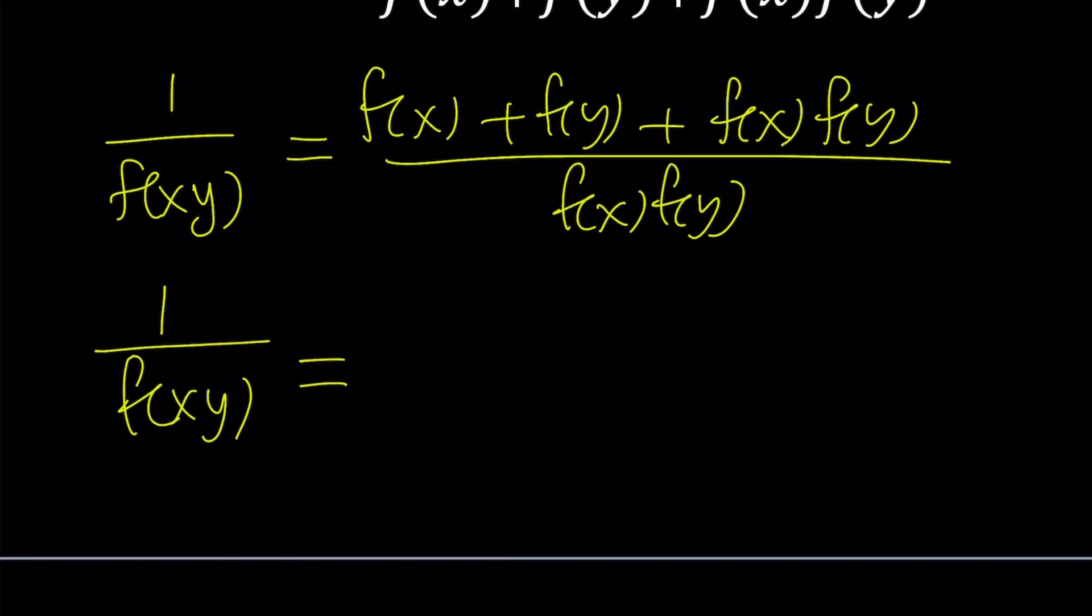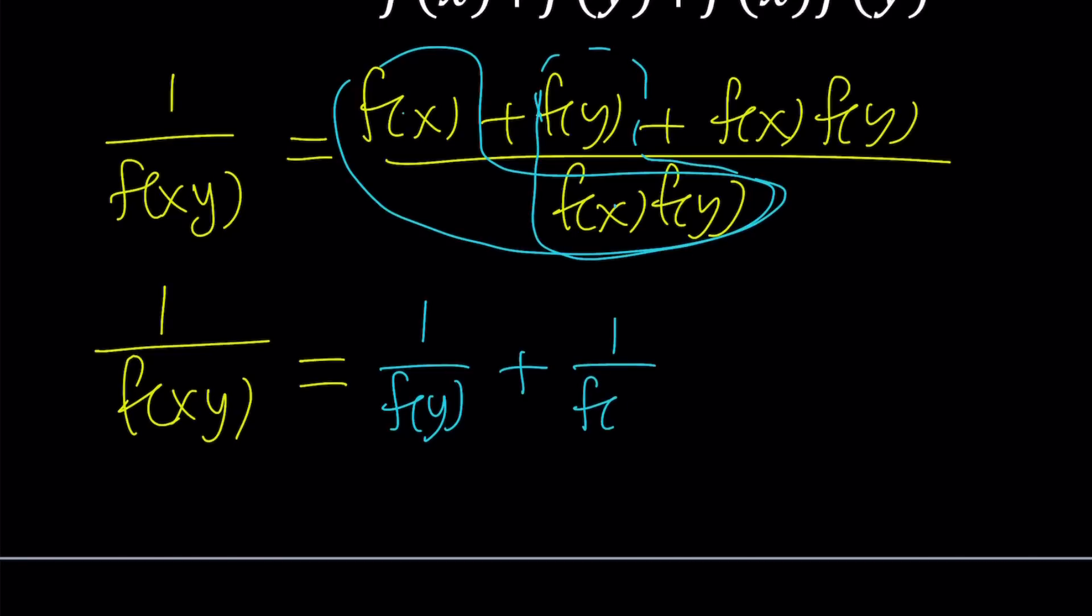Now, how do you split it up? Well, first of all, think about it. I have f of x divided by this, right? Now f of x is going to cancel out. That's going to give me 1 over f of y. Nice. That's what's really nice about this. And then you're going to do this with f of y. And that's going to give you f of y is going to cancel out. You're going to get 1 over f of x. Hopefully you can do the algebra here. And finally, if you do this, you're going to get 1 because f of x times f of y divided by itself is going to give you 1.